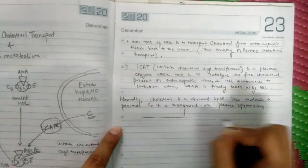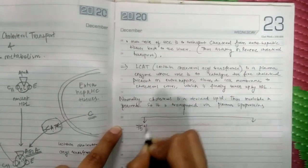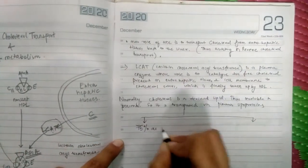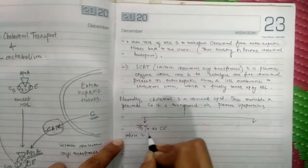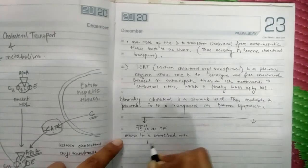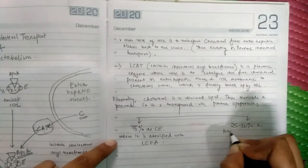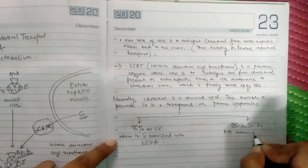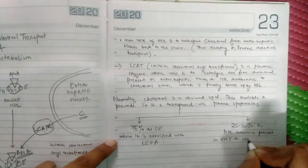One, that is 75% as cholesterol esters where it is esterified with long chain fatty acids, and 25 to 30% as free cholesterol which is present in extra hepatic tissues and cell membrane.